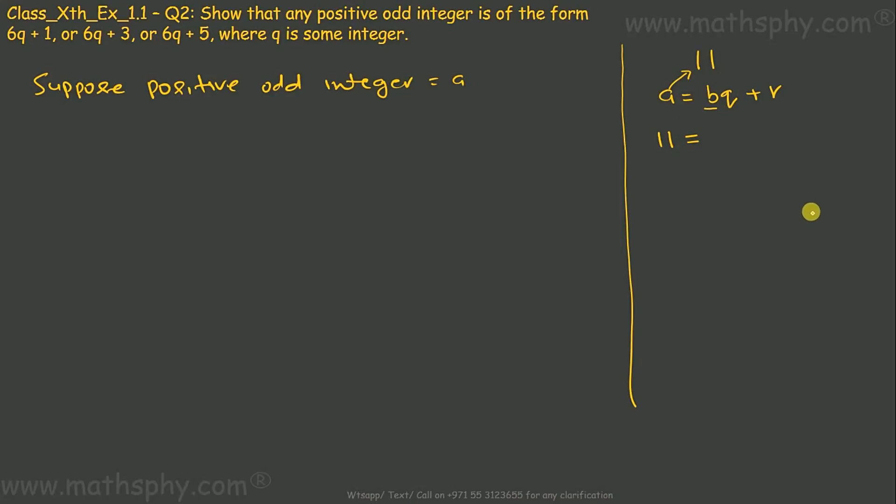Say 4. So b is say 4. You can think of any integer here. Then let's divide this 11 by this integer 4, or I say let's divide a by b. So 11 divided by 4 gives you 2 as quotient and 3 as remainder.